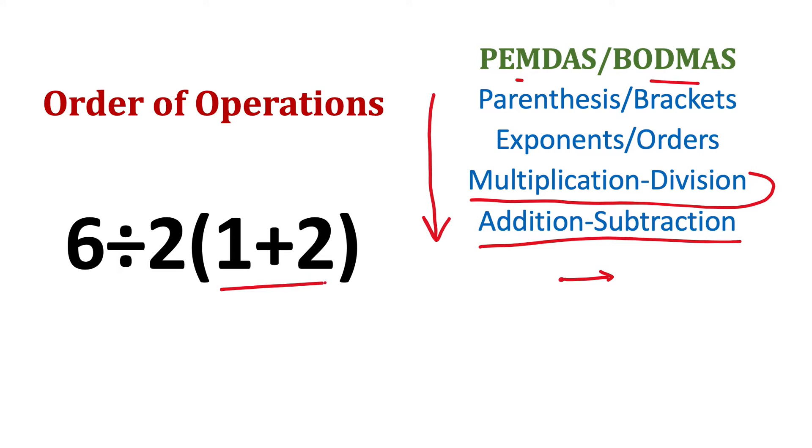First, we need to solve this braces, so we get this. Now what should we do next? Next is exponents. Here we don't have any exponents. So next is multiplication and division, and then go from left to right.